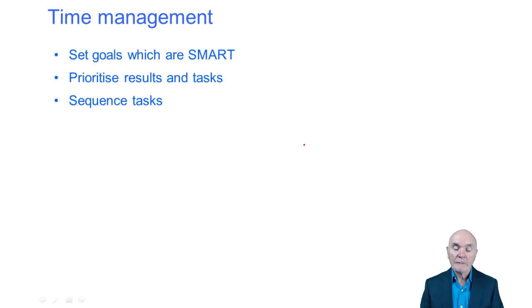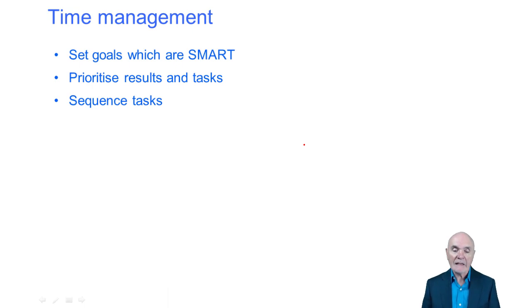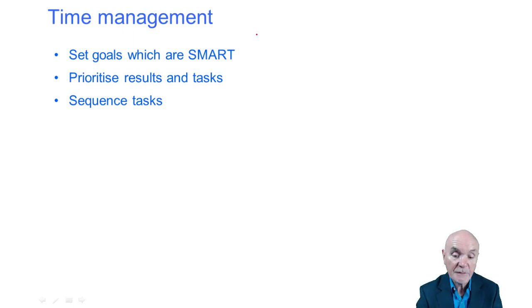Time management is also an important element of personal development. People who can't manage their time will habitually miss deadlines, which can be very serious. They may find themselves working late into the night simply because they haven't thought about priorities, suddenly discovering something that has to be in tomorrow morning. Poor time management tends to make people's work slightly chaotic. There is a very real difference between importance and urgency.